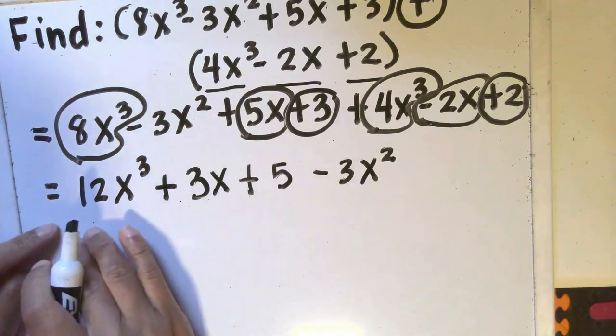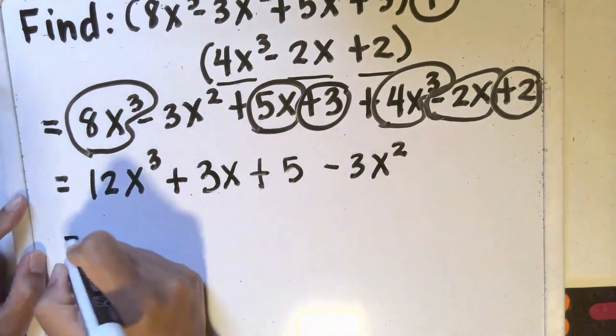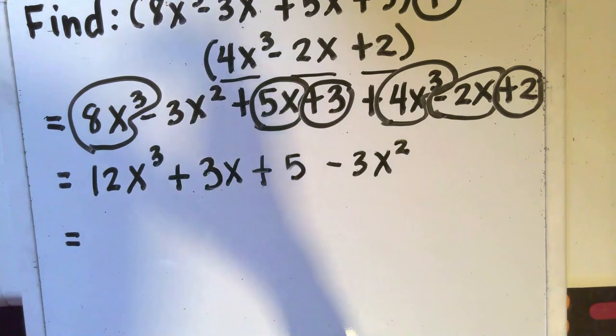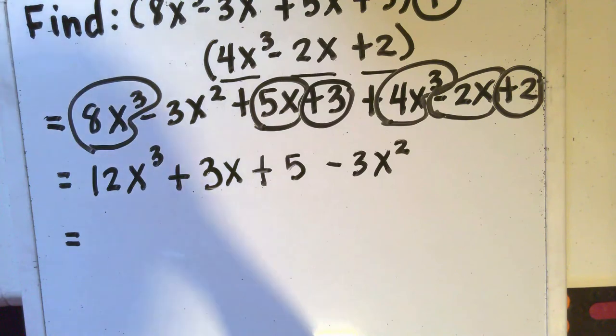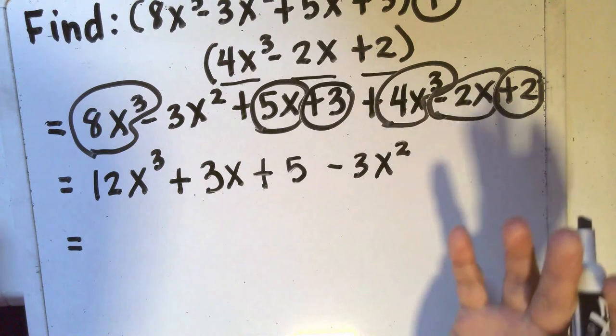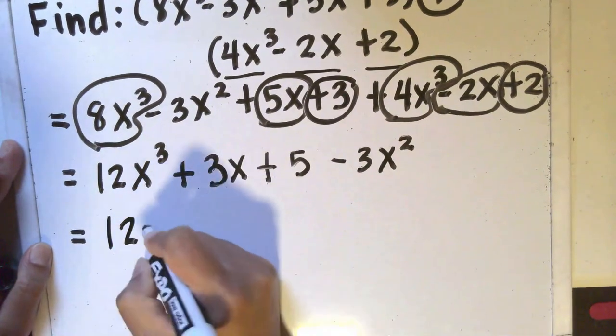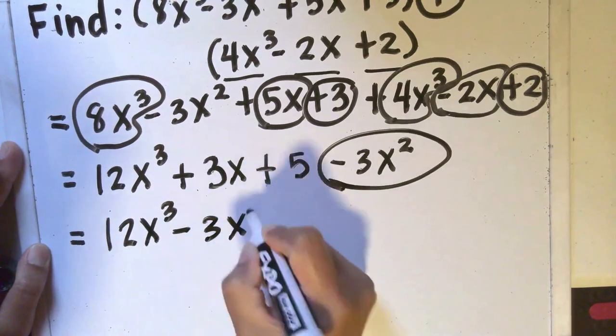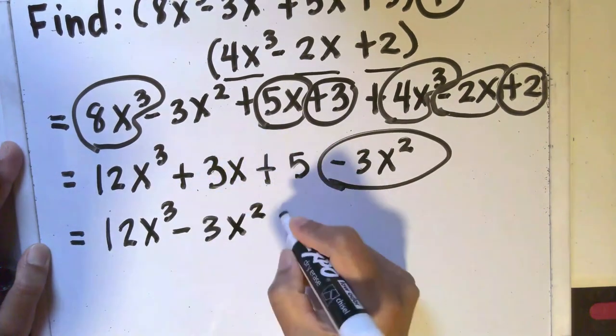Now you can leave your answer this way but please pay attention to your teacher's instruction. Some of them like the exponents to be arranged from the greatest to the least. So if your teacher is very specific about that then you can write your answer as 12x³ - 3x² + 3x + 5.